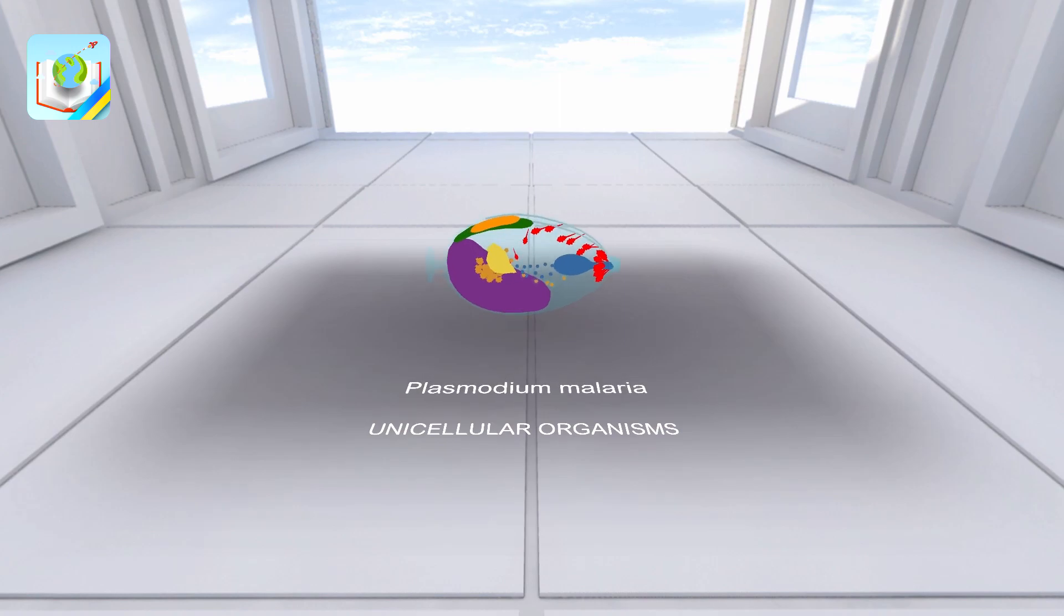Malaria is a very dangerous disease common in countries with a warm and humid climate. Its causative agent is malaria plasmodium. It develops in liver and blood cells, causing their destruction. The carrier of the parasite is the Anopheles gambiae.